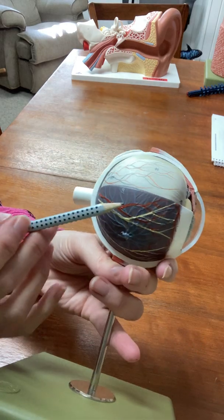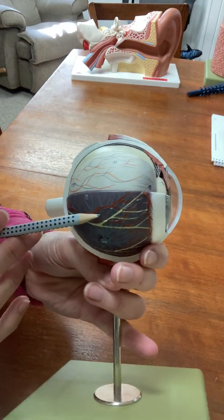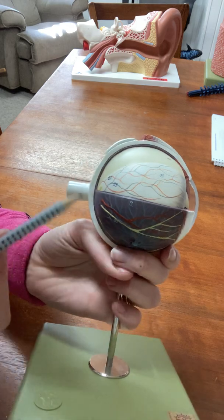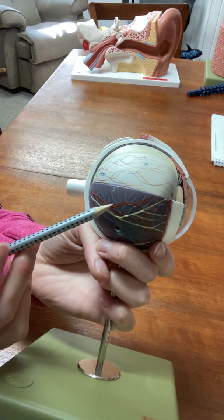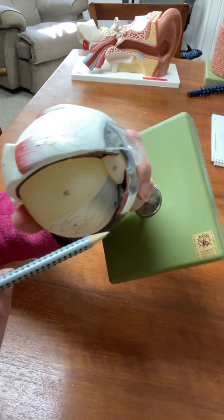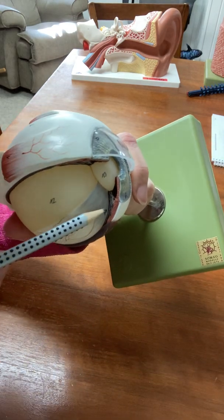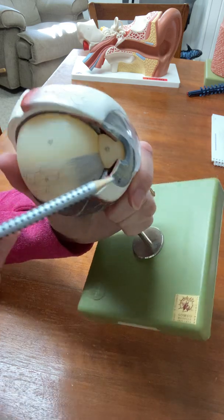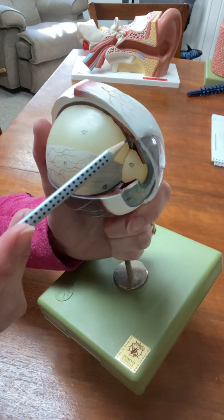The middle layer of the eye is shown here in this dark purple color. That is called the choroid, and then if you follow the choroid anteriorly, the choroid becomes pink and it thickens a little bit. So you see that here and you see it here.